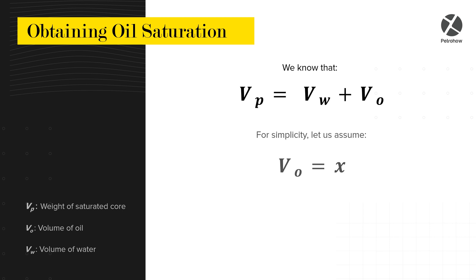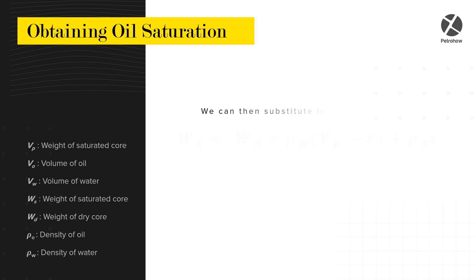For simplicity, we can assume the volume of oil equals x. We can then rewrite the equation as the volume of water equals the pore volume minus x. We can then substitute the volumes of oil and water in the initial equation as follows.